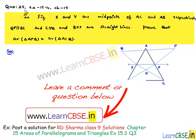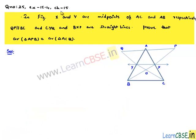Let us discuss question number 25 from Exercise 15.4, Chapter 15. In the figure, X and Y are midpoints of AC and AB respectively, such that QP is parallel to BC, and CYQ and BXP are straight lines. Prove that area of triangle APB is equal to area of triangle ACQ.